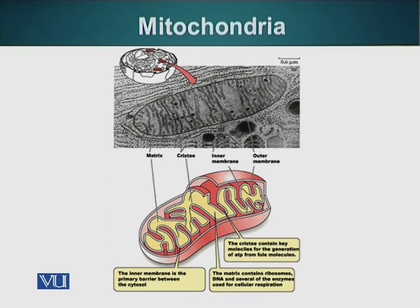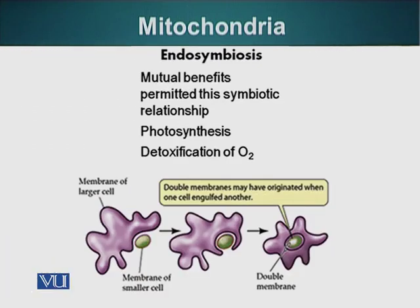It is thought that cells acquired mitochondria through a process called endosymbiosis. A couple billion years back, when we only had cells, some cells had a mode of eating which required them to eat other smaller cells — predatory cells, for example. Scientists think that one such large cell engulfed a smaller cell like mitochondria and was unable to digest it. So the mitochondrial cell — basically the small bacterium that it originally was — started living in the larger cell.